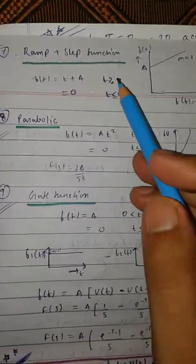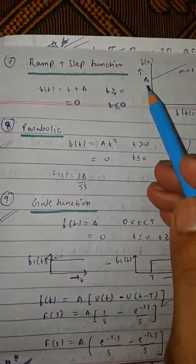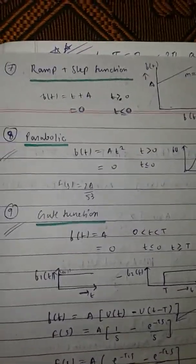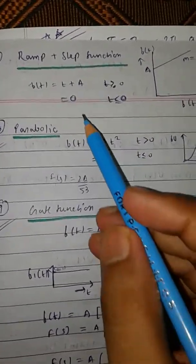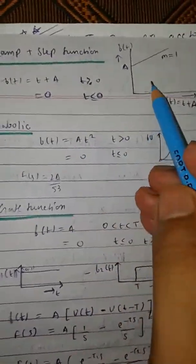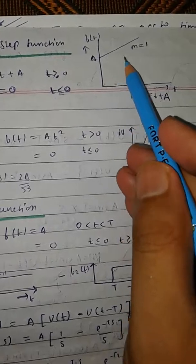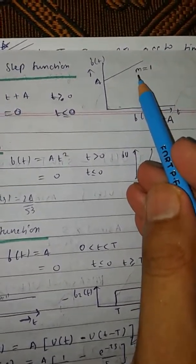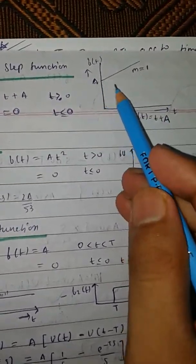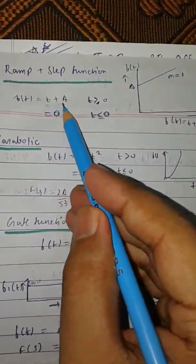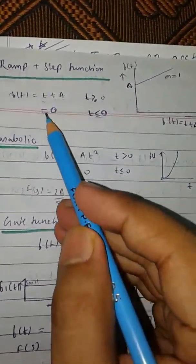Similarly, for the delayed ramp function, it starts after a T interval. So for t greater than T, f(t minus T) equals t, and for remaining values it is 0.